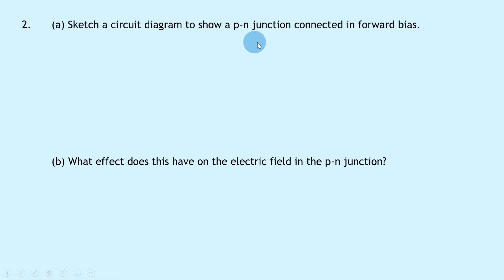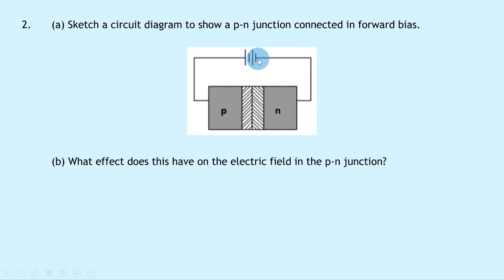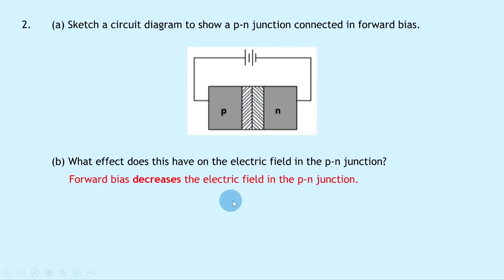Question 2a says to sketch a circuit diagram to show a PN junction connected in forward bias. Remember in forward bias, the PN junction has the negative terminal of the battery connected to the N-type and the positive terminal connected to the P-type, and you can see a relatively small depletion region between the P and N-type materials. Part B says what effect does this have on the electric field in the PN junction? Forward bias decreases the electric field, meaning conduction can take place because the electrons in the N-type have enough energy from the battery to move across the junction, and holes in the P-type also move toward the negative terminal, giving us current flow.